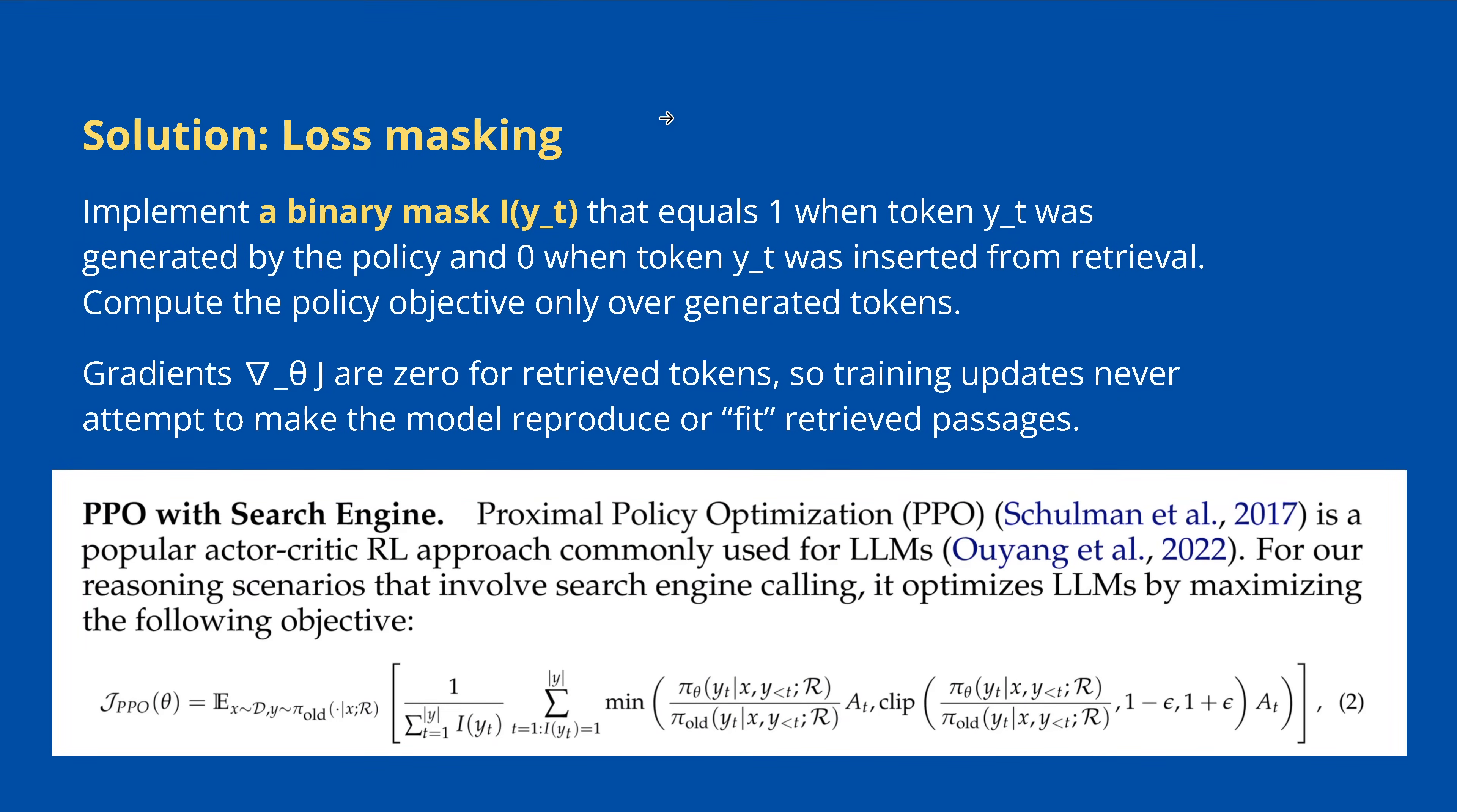So what we do? The solution is loss masking. The authors tell us, we played around and we found a binary mask I. That simple process that equals 1 when the token was generated by the policy pi theta and is 0 when the token was inserted from the retrieval process. And we compute the policy objective only over the generated tokens. So therefore, our gradients, our nabla J, are 0 for the retrieved tokens. Therefore, the training updates we have, the policy gradients, never attempt to make the model reproducing or overfit the retrieved passages. This explains this mysterious I that I showed you some minutes ago. A binary mask to identify specific tokens.